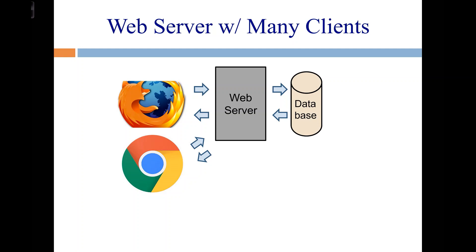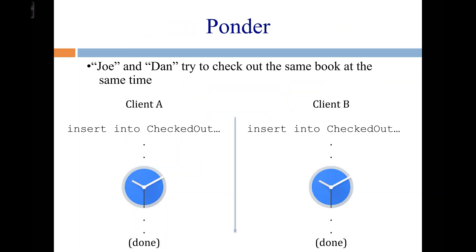Let's go back to this question of how we handle multiple concurrent clients connecting to the same web server and thus the same database. We saw in a simple example where two patrons tried to check out a book with the exact same serial number at the same time, the system automatically handled this. Since these insert commands are done in a transaction, the transaction automatically causes one to succeed and one to fail due to a primary key violation.